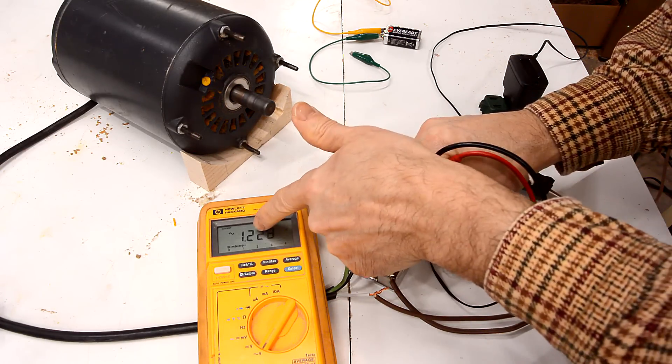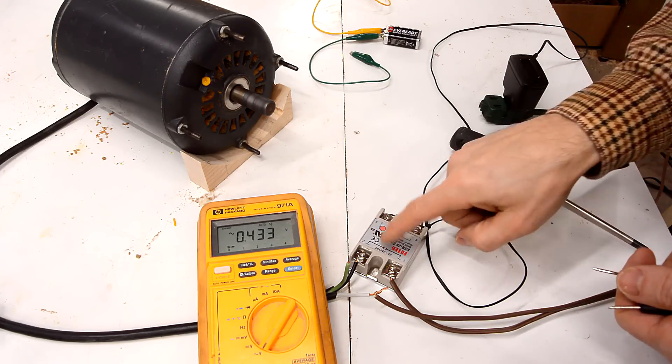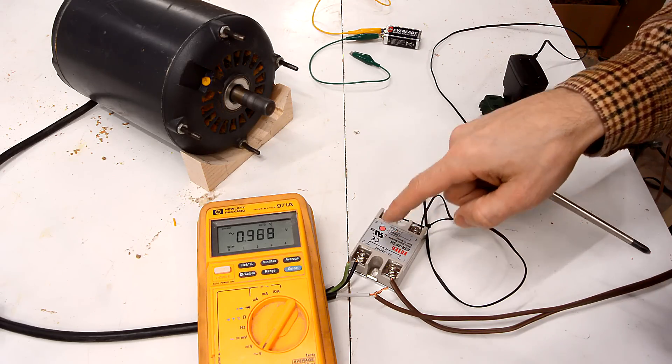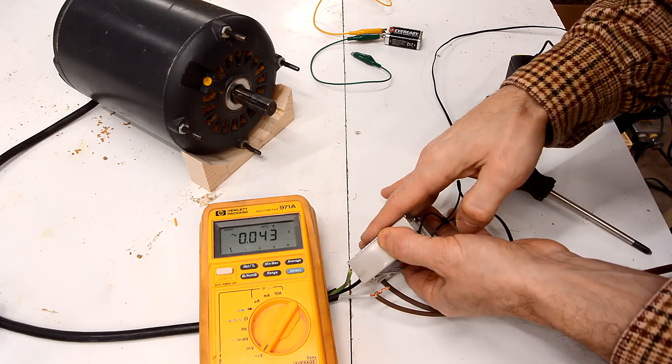So you can see there's 1.2 volts of voltage drop. And if that motor draws say 4 amperes that's 5 watts that's going to be dissipated in the relay which means that relay is going to get warm. I just unplugged it and it already is warm.